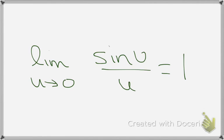Okay, in this video I want to show you how you can use this very important limit for trig functions. This limit says that if you take the limit as u goes to 0 of sine u over u, then that limit equals 1.